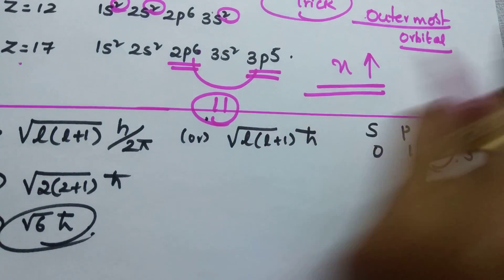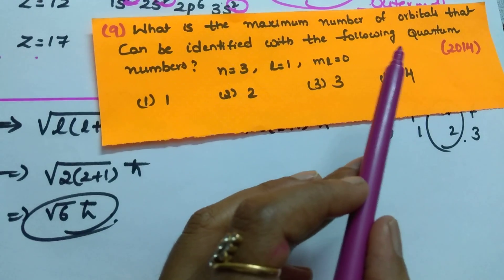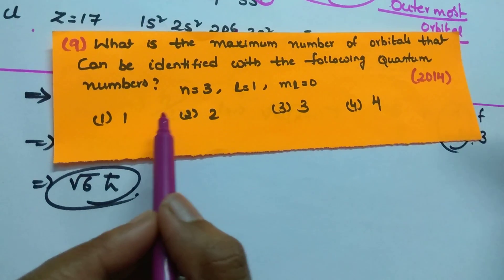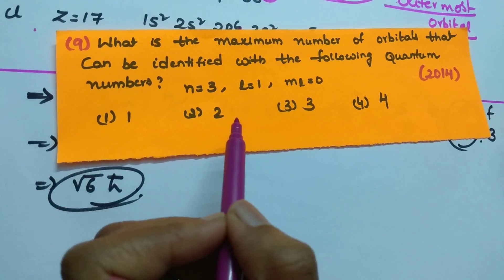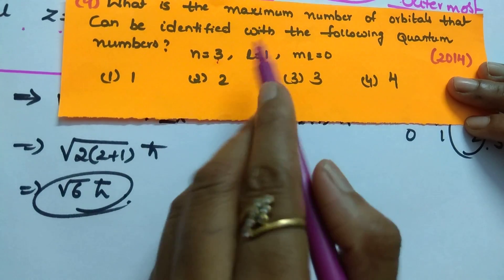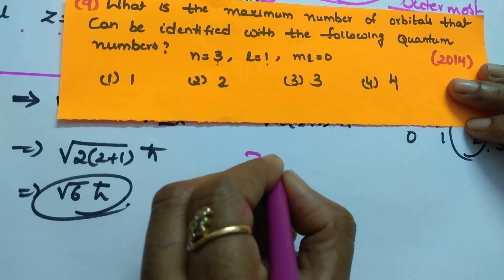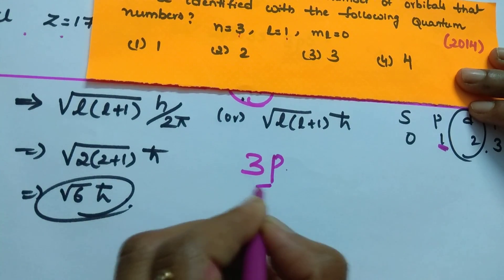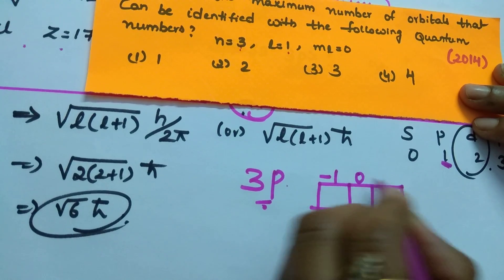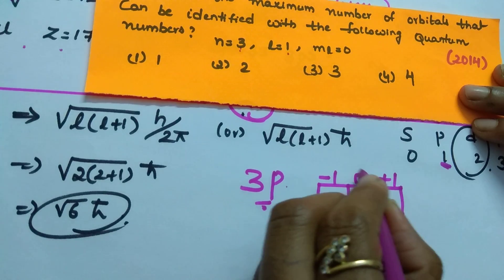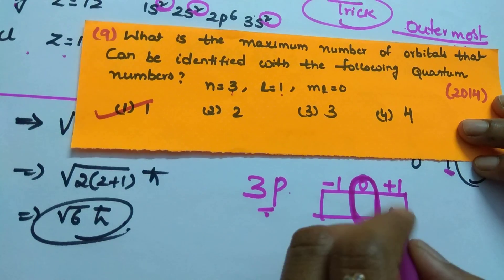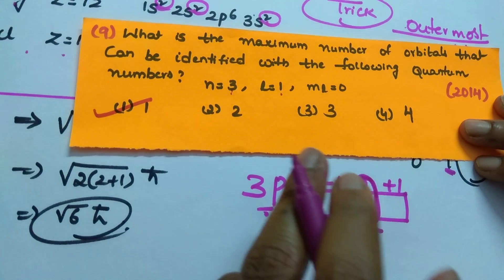Next question from 2014: what is the maximum number of orbitals that can be identified with the following quantum numbers? When n=3 and l=1, that is 3p. The m values for p orbitals are -1, 0, +1 — corresponding to px, py, pz. With m=0, how many orbitals are possible? 1 orbital. And how many electrons can be accommodated? Maximum 2 electrons.